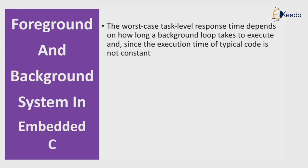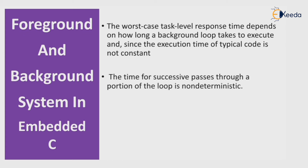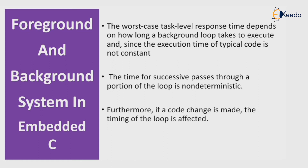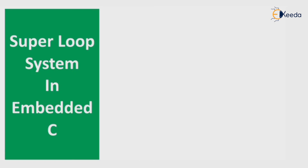The worst case task level response time depends on how long the background loop takes to execute, and since the execution time of typical code is not constant, the time of successive passes through a portion of a loop is non-deterministic. Furthermore, if code changes are made, the timing of the loop is affected. The timing of the loop depends on the code — as the code changes, it will affect the timing of the loop.